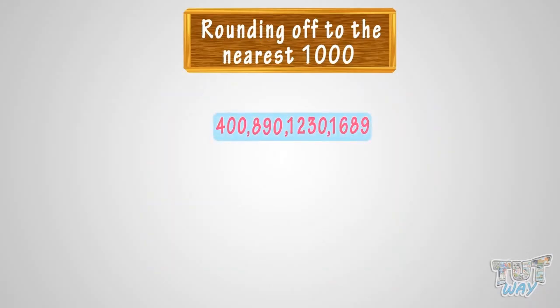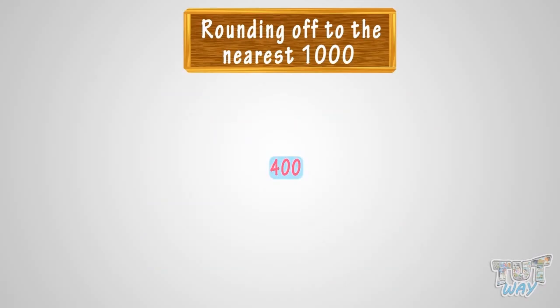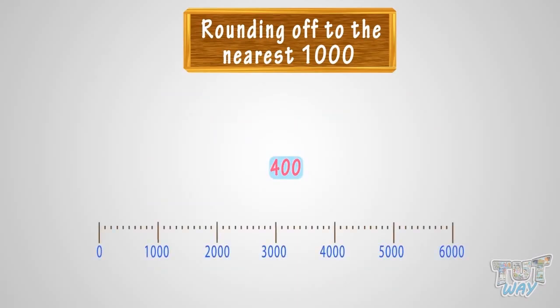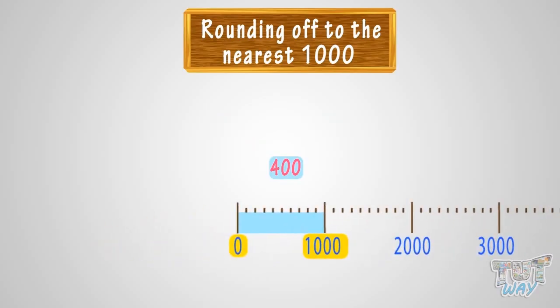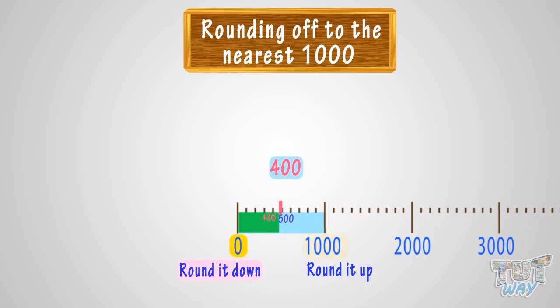Now we will learn rounding up the numbers to nearest 1000. Let's start with 400. See the number line — where can you fit 400 on this number line? It is somewhere between 0 and 1000. We know there are always two options: either round the number up or round it down. The midway mark between 1000 is 500, and 400 is below or before the 500 mark, so we will round it down to 0.